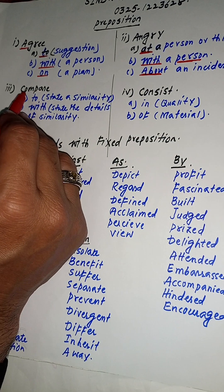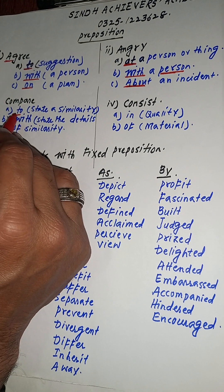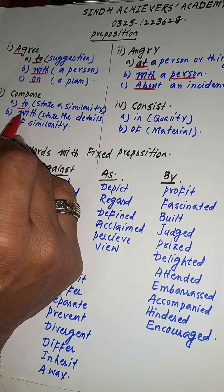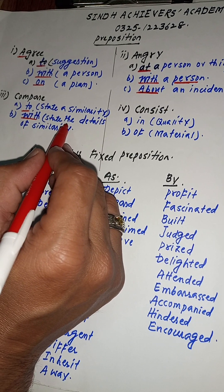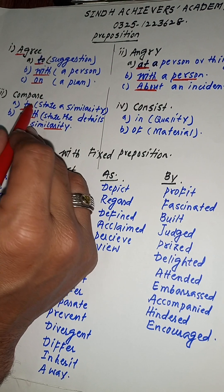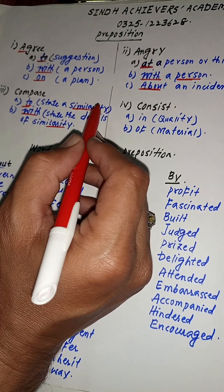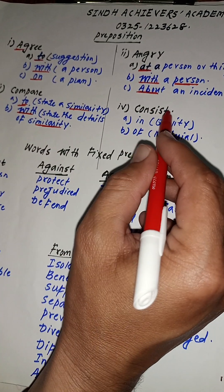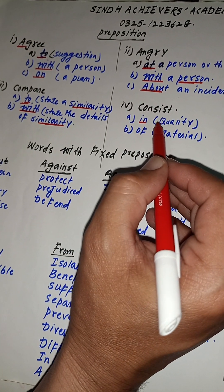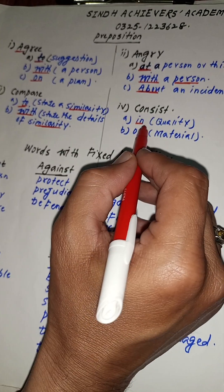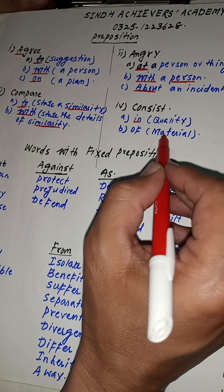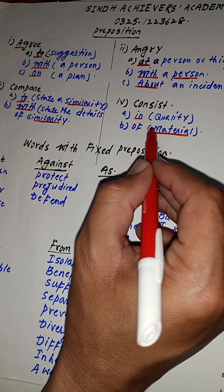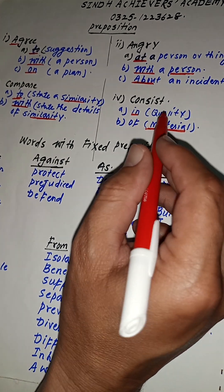We have the word COMPARE. We use 'compare to' when we are just stating a similarity. We use 'compare with' when we are stating the details of similarity. For CONSIST: we use 'consist in' when talking about a quality, and 'consist of' when talking about material things — what something is made of.